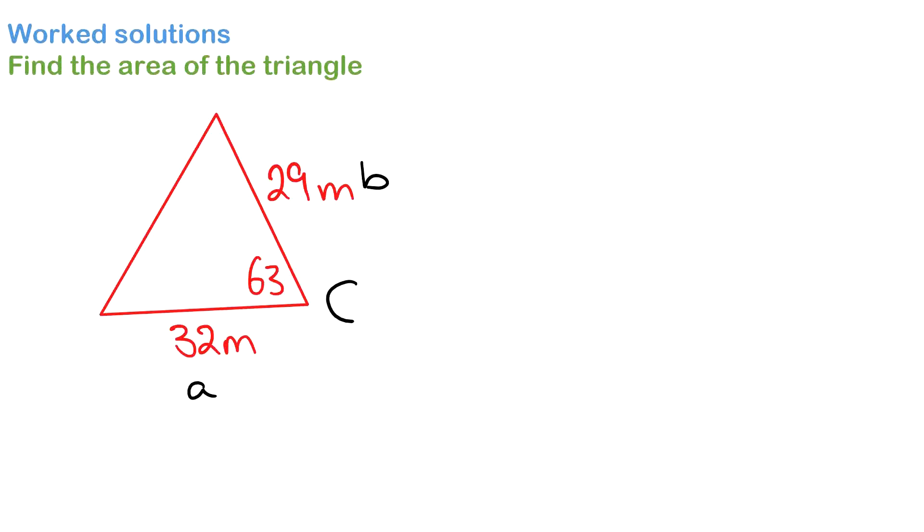Remember, always a good tip just to write down your formula before you begin. So it's A = 1/2 ab sin C. Now remember in between these there's multiplication signs, so make sure you put them in.